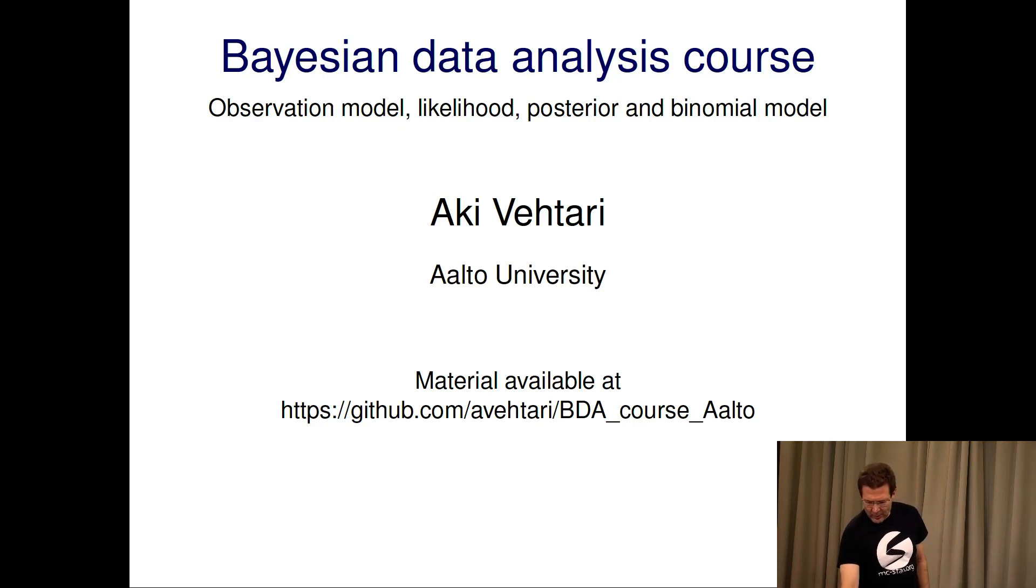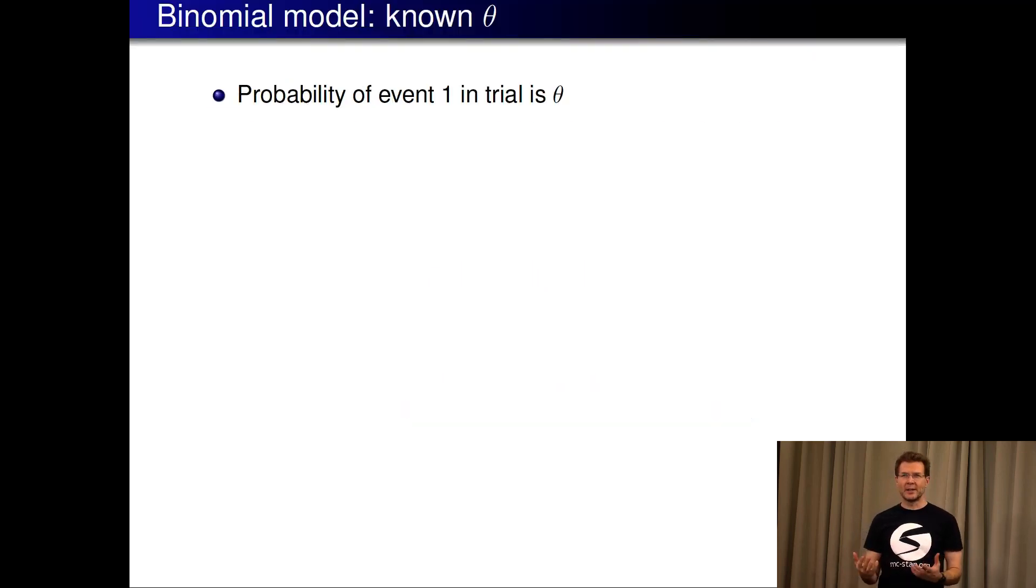Last time I talked about flipping a coin and also taking chips out of the bag, either red or yellow. In these cases we can think that the probability of event one, which could be probability of heads or probability of red chip in a trial, is theta. One trial is when I take one chip out of the bag, and I put it again, another trial, and I took another chip.